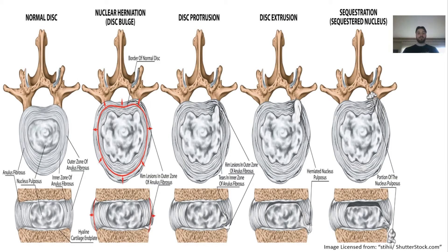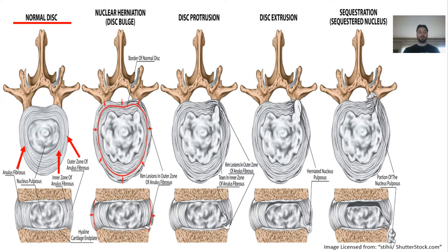What we see here is just a visual diagram that represents different stages within spinal disc abnormalities or spinal disc damage. On the far left we have a normal, healthy disc. We have our annulus — the outer portion, the inner portion — and then we have our nucleus, which is the center of the disc. Moving on, we can look at a nuclear herniation, which may also be referred to as a disc bulge in some cases.